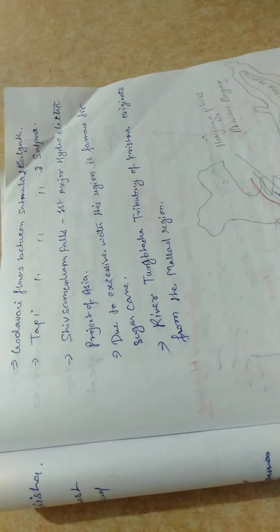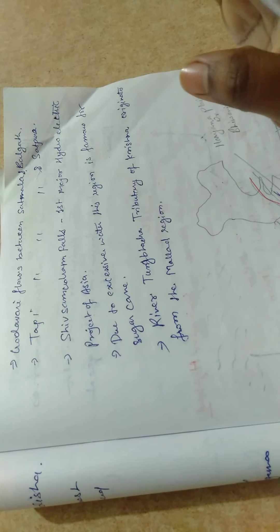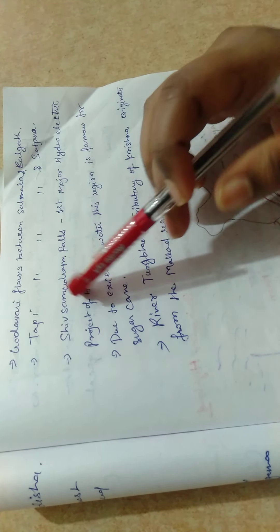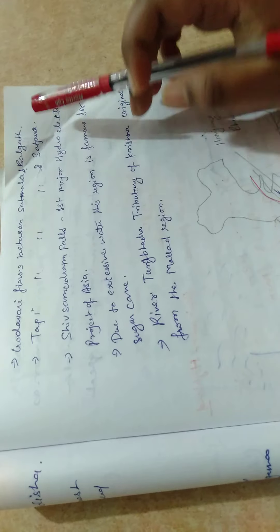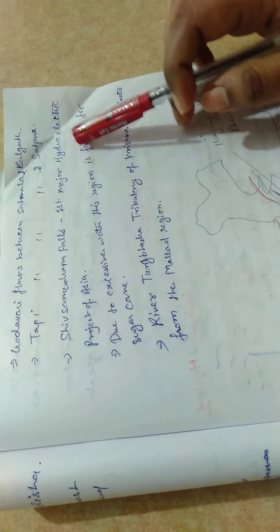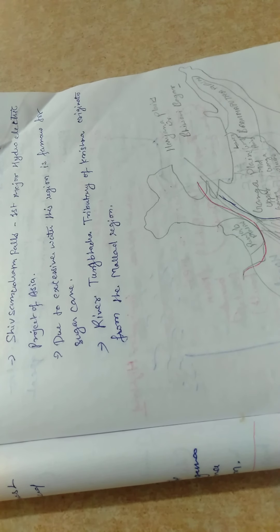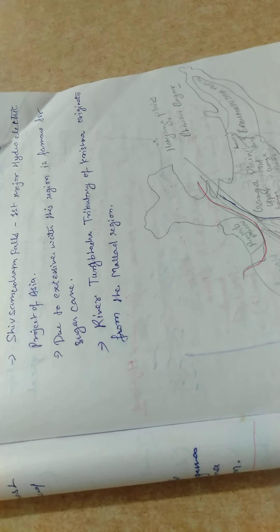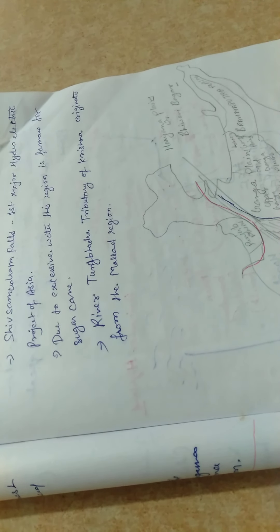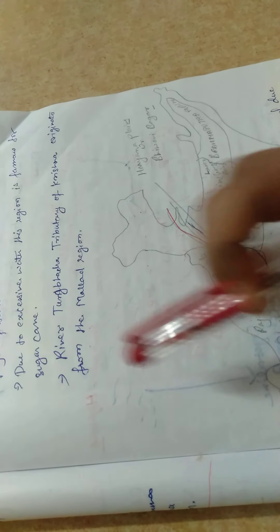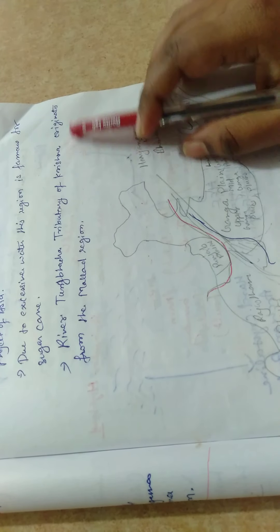So last class, we discussed that Godavari flows between Satmala and Baghdad. Then, Tapi flows between Satmala and Satpura. Shib Sabundra is the first major hydroelectric project of Asia. Due to excessive water, this region is famous for sugarcane. River Tungabhadra, a tributary of Krishna River, originates from the Malnad region.